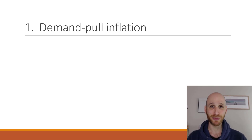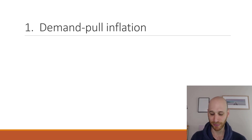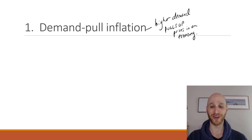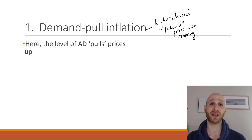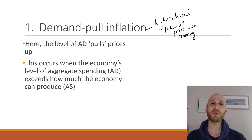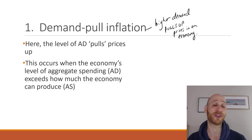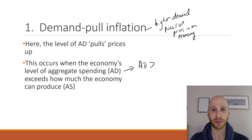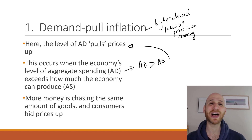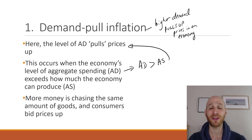Our first form of inflation is called demand-pull — it's just as it sounds. Higher demand pulls up prices in an economy, and we're particularly looking at aggregate demand, which is total demand in the economy — the sum of all individual demand curves. Demand-pull inflation occurs when the level of spending (aggregate demand) is greater than how much an economy can produce (aggregate supply). More money, more demand, is chasing after the same amount of goods.